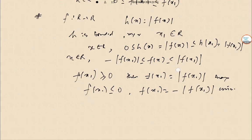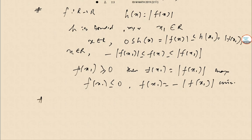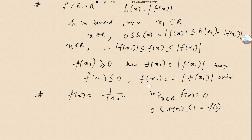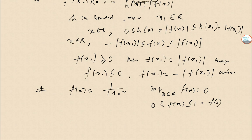Now for the last part, we take the function f(x) = 1/(1 + x²). This is a continuous non-negative function that satisfies the given condition. The infimum over x in R of f(x) equals 0, but f(x) > 0 for all x, so the minimum is not attained. The function attains its maximum value at x = 0, where f(0) = 1. Therefore f attains its maximum but not its minimum.